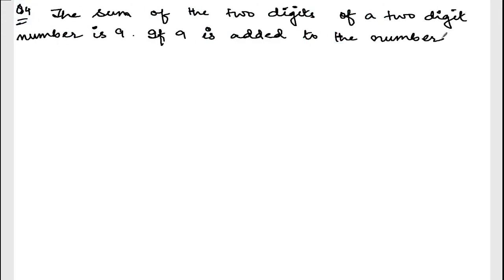Now we are doing Exercise 4.3, Question Number 4. Let me write down the question. The question says: the sum of two digits of a two-digit number is 9. If 9 is added to the number, the digits are reversed. Find the number.